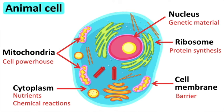The cytoplasm is a jelly-like material that contains nutrients, salts, and other membrane-bound organelles. Many chemical reactions also occur in the cytoplasm — for example, the chemical reaction of respiration in mitochondria.